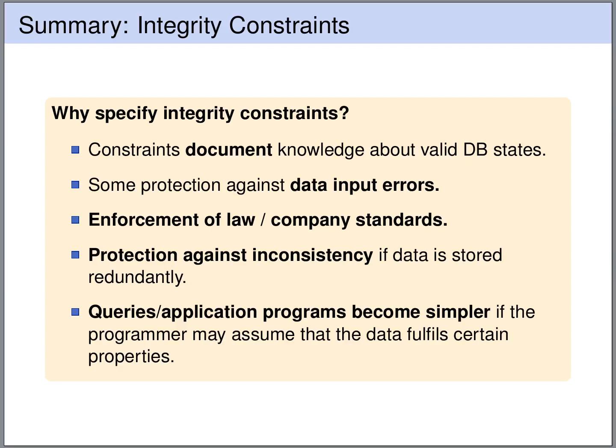So why do we want to express these integrity constraints? These constraints document knowledge about valid database states — the remaining valid states should be meaningful in the sense that they represent a real-world scenario. By restricting the set of valid database states, we introduce protection against data input errors. For example, you cannot accidentally fill in a birth year in place of an age if we have a restriction that age must be between 18 and 150. Such restrictions may also be used for legal enforcement or company standards, such as ensuring every customer is at least 18.